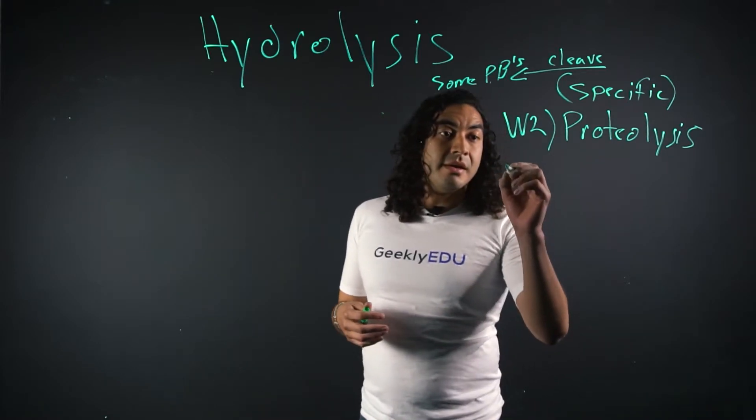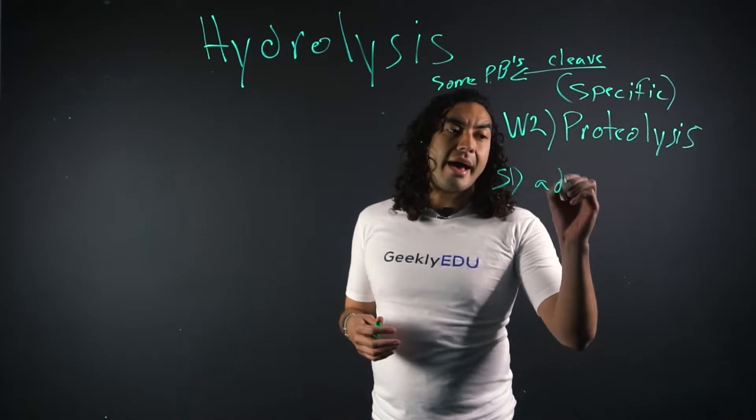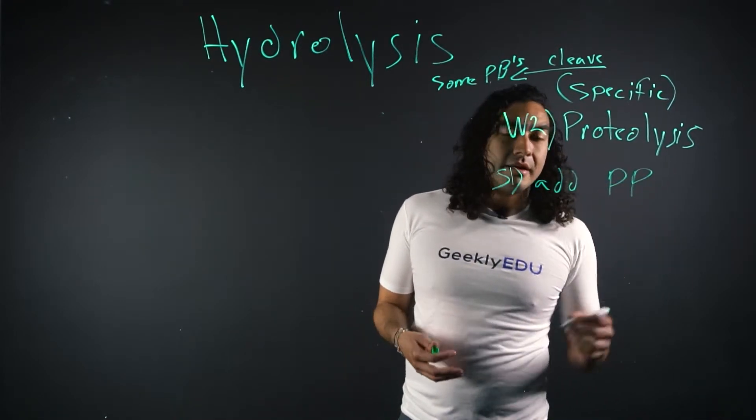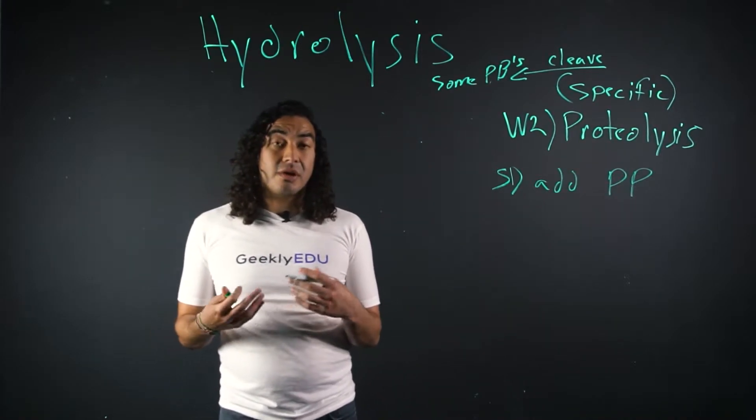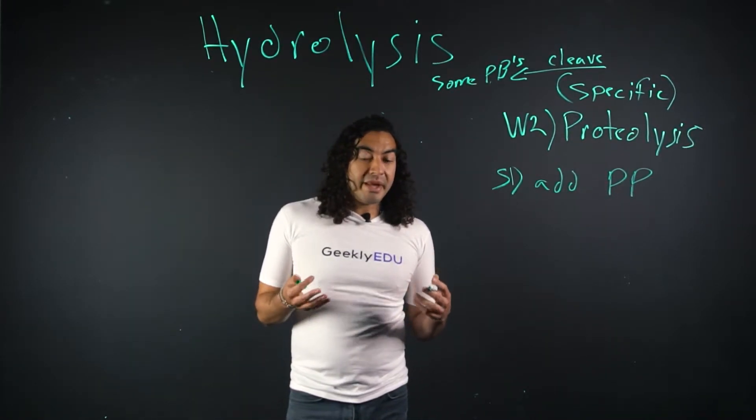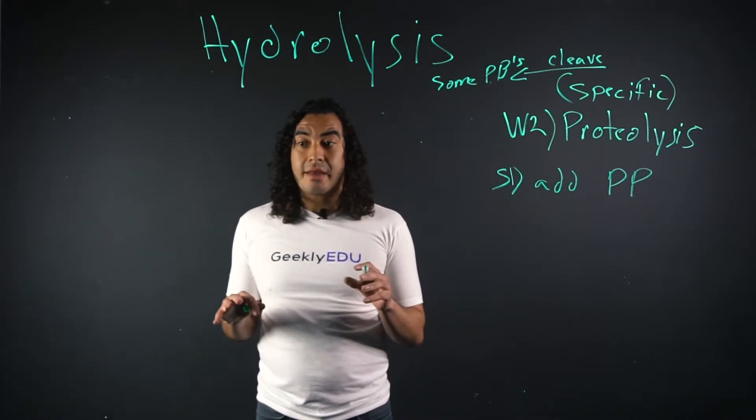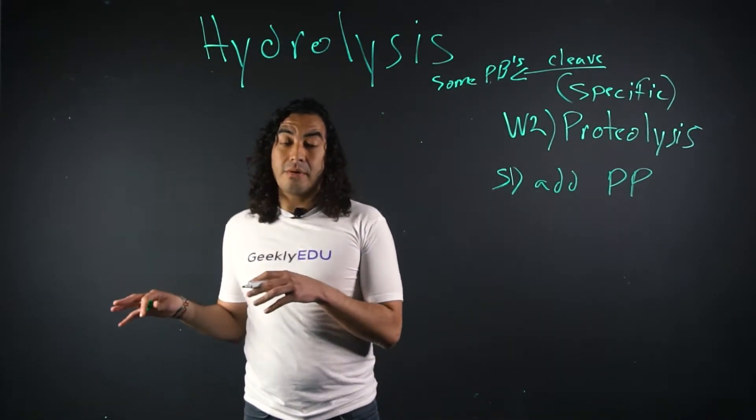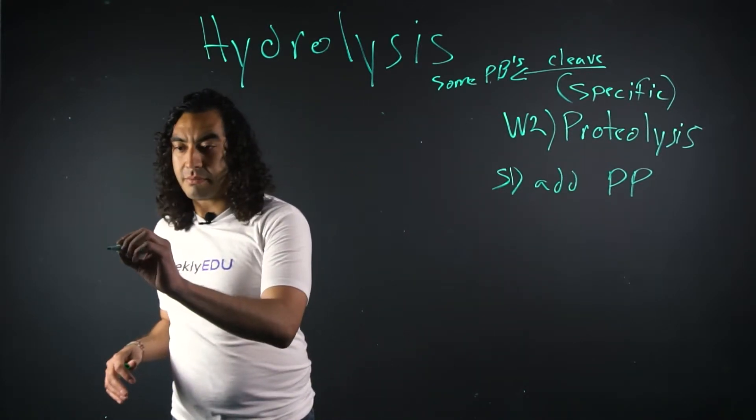And proteolysis is pretty cool. So step one of proteolysis is we're going to add our polypeptide, pretty simple again. But this time when we add our polypeptide we actually have to draw a structure. Because it's very important to know what amino acids we have in this polypeptide and where they're at in terms of the N-terminal or the C-terminal. So our structure is going to look a little bit strange to you maybe at first.